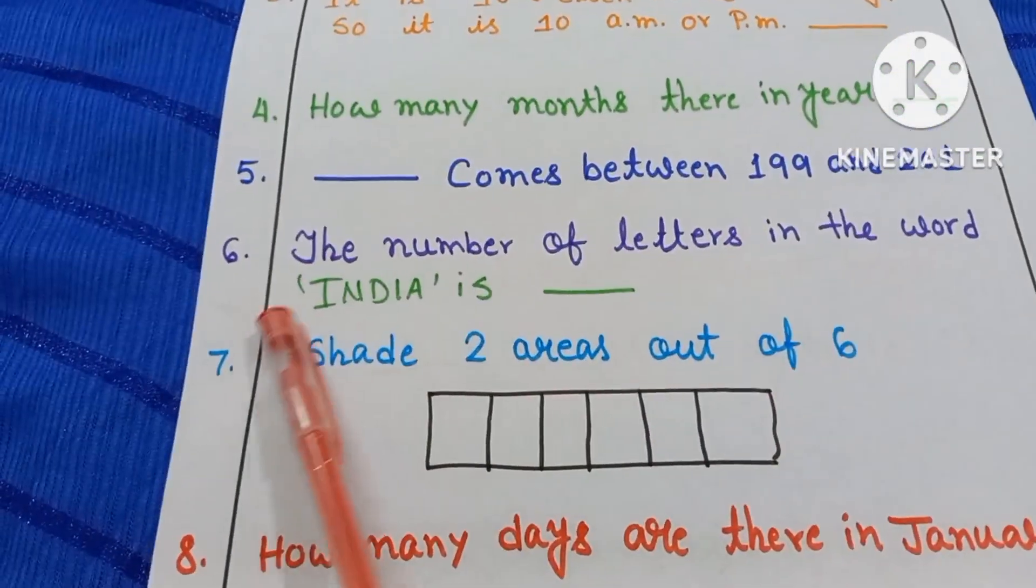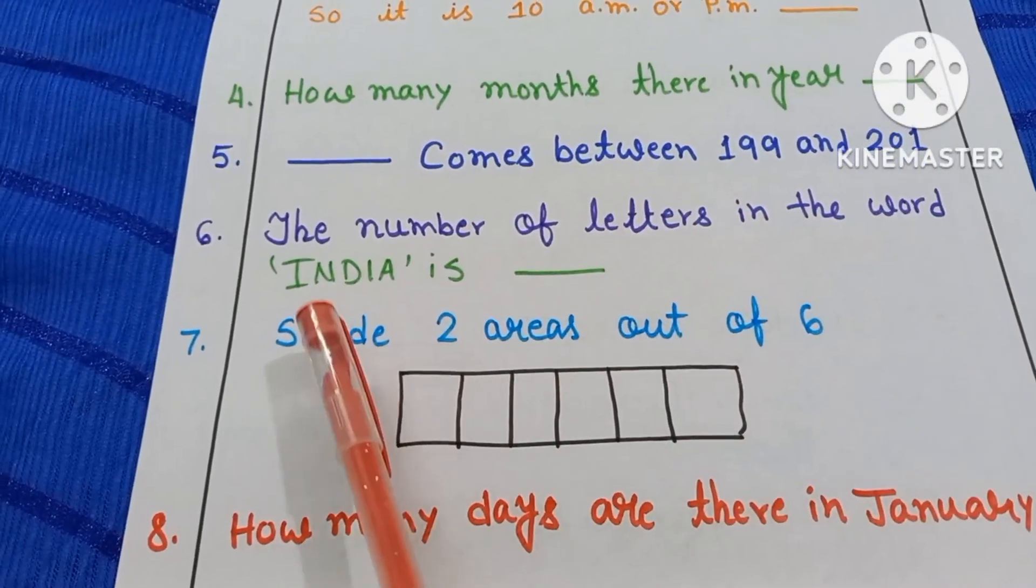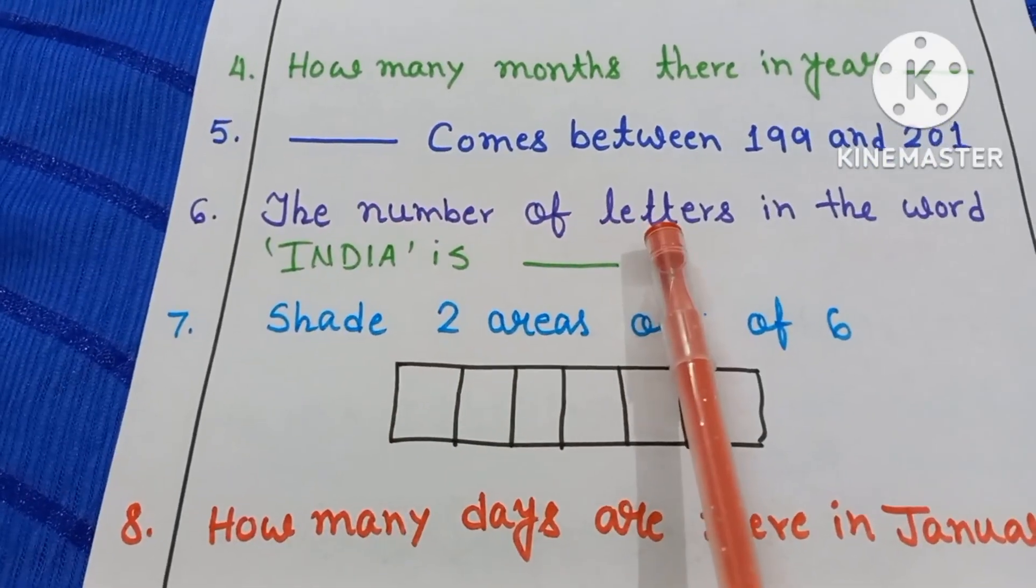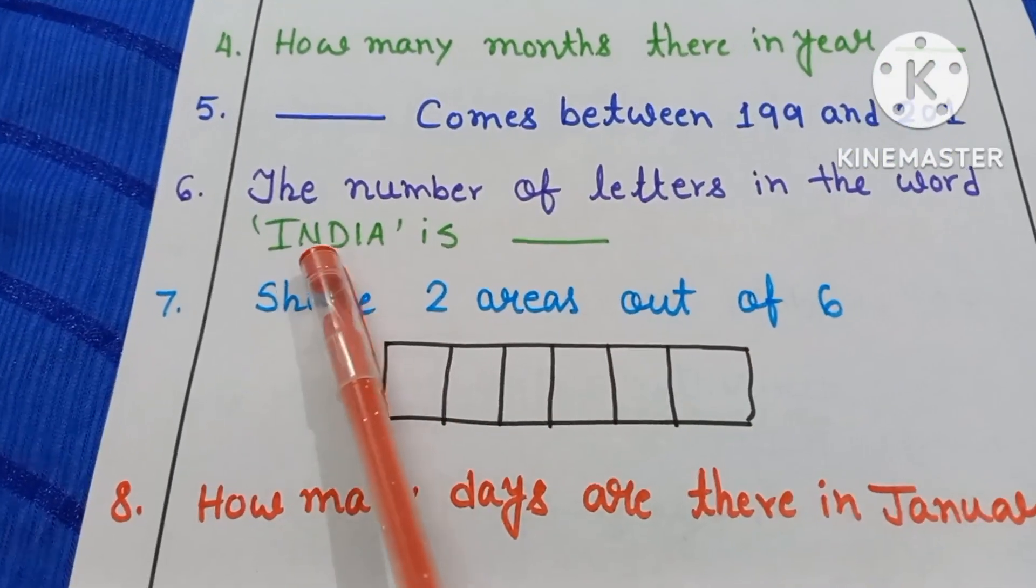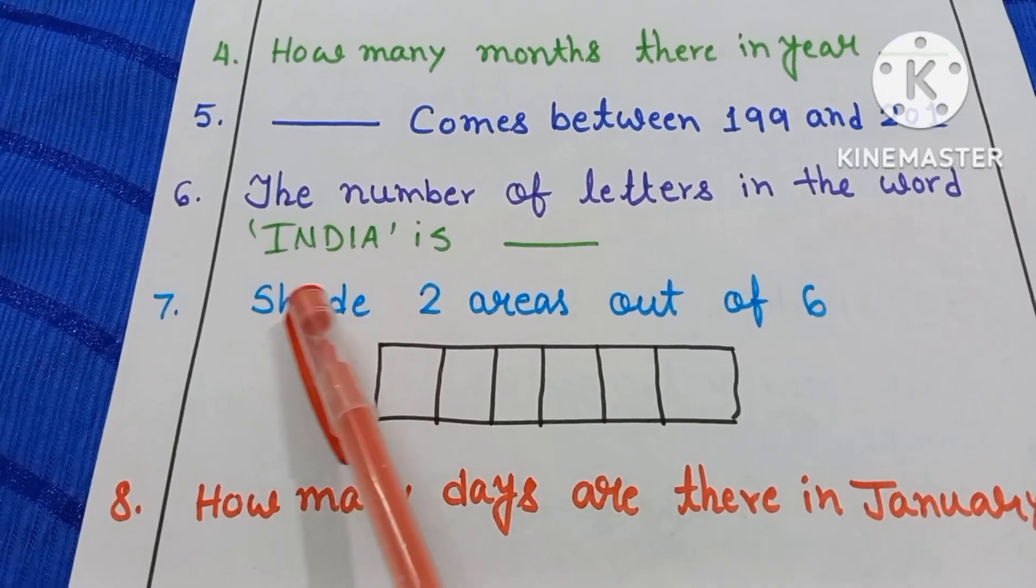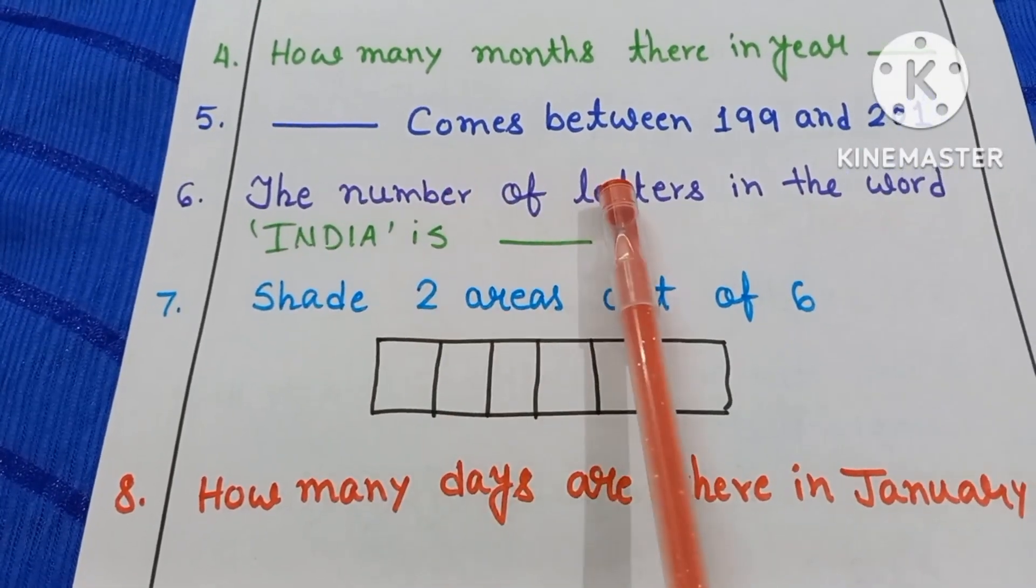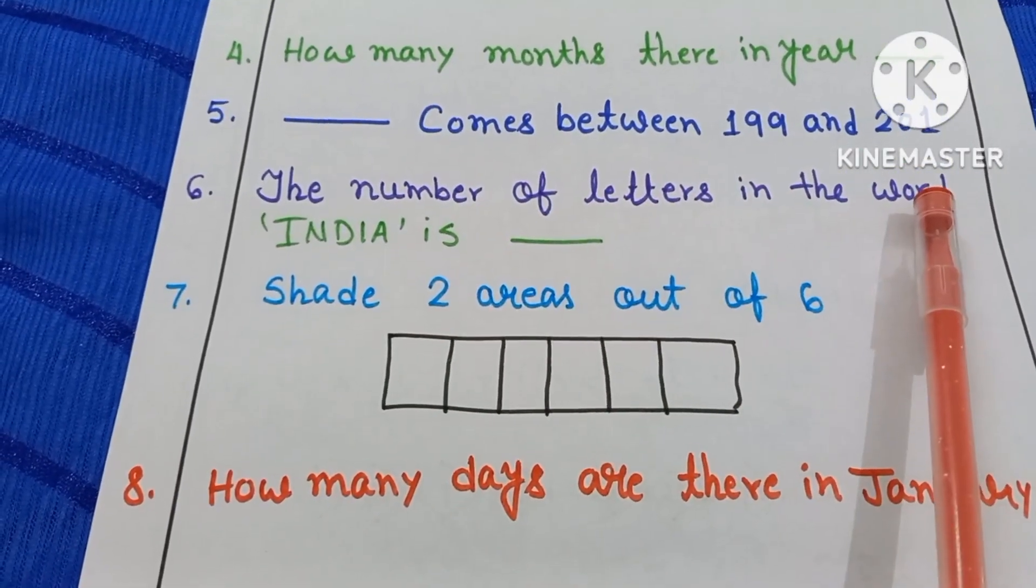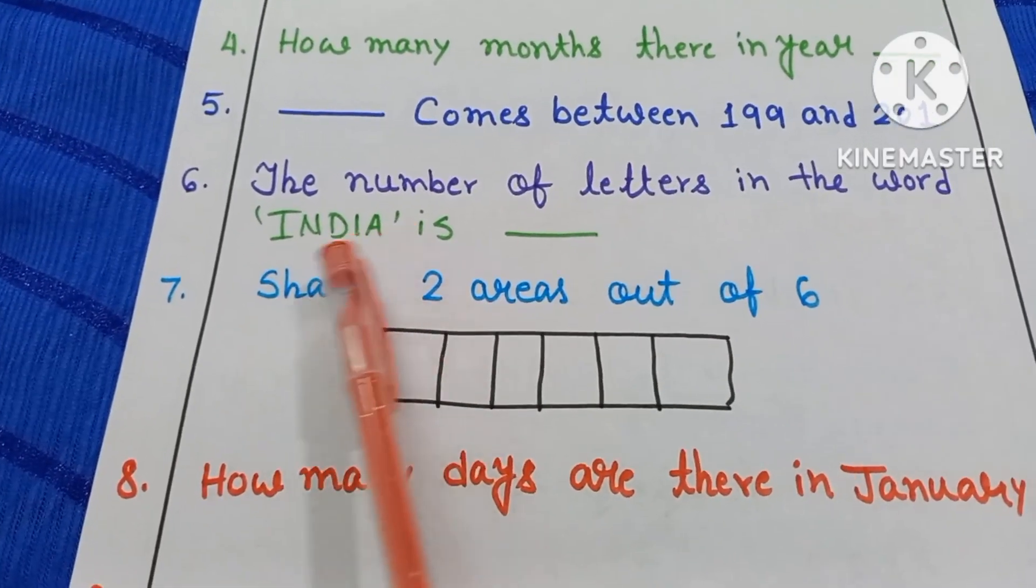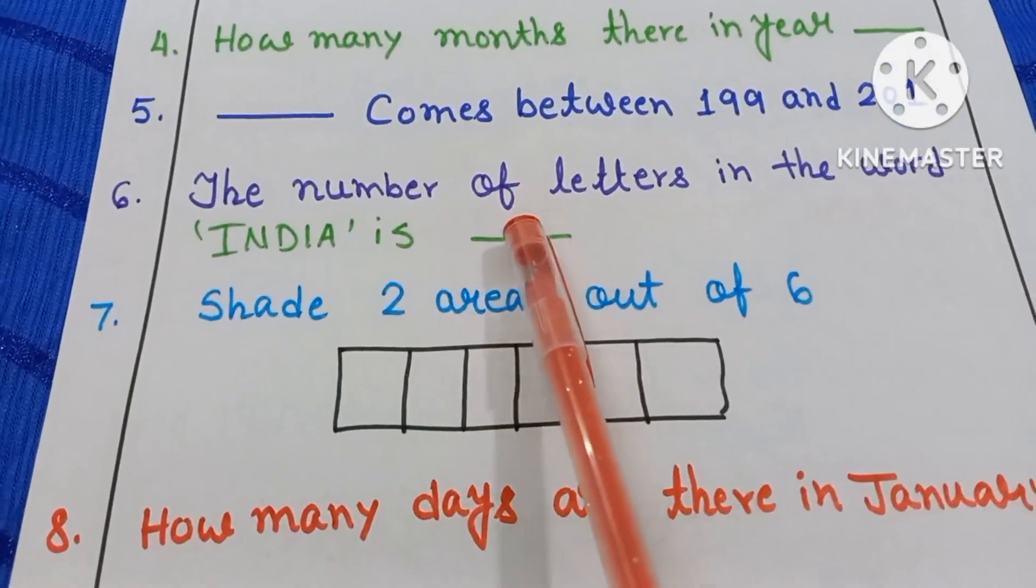Number 6. The number of letters in the word India is dash. The number of letters, that means how many letters are here? You have to count. You have to read the question carefully. The number of letters in the word India. How many letters are here? Let's count it. 1, 2, 3, 4, 5. So here you have to write only 5.